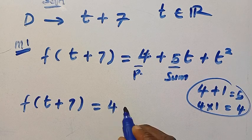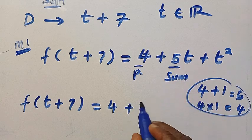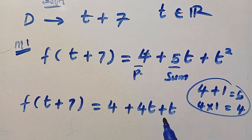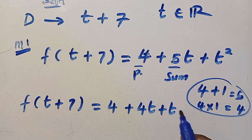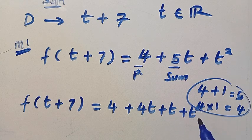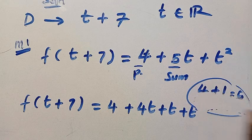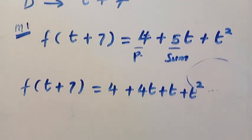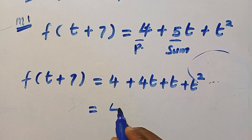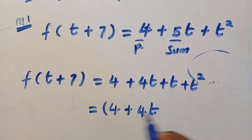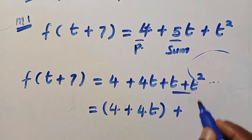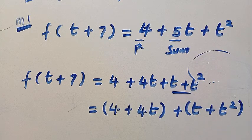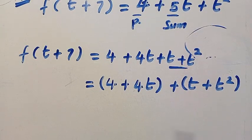Then we write 4 plus, instead of 5t, we change it to 4t plus t. Then plus t raised to the power of 2. Then by grouping, we have 4 plus 4t in brackets, plus we will group this as t plus t squared.